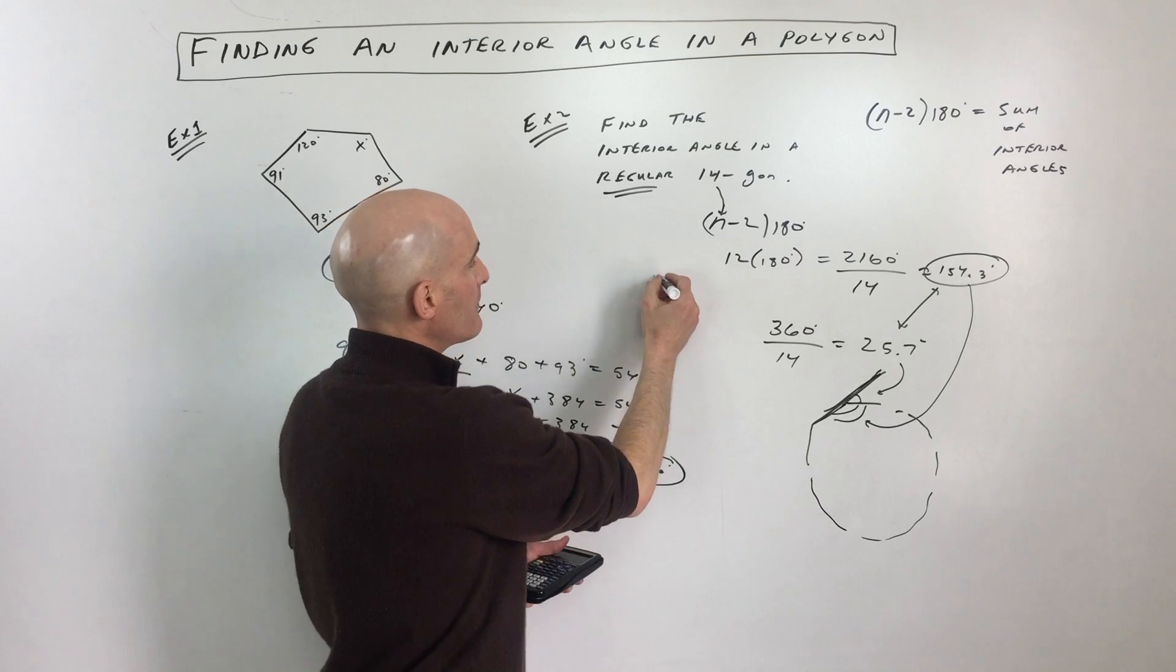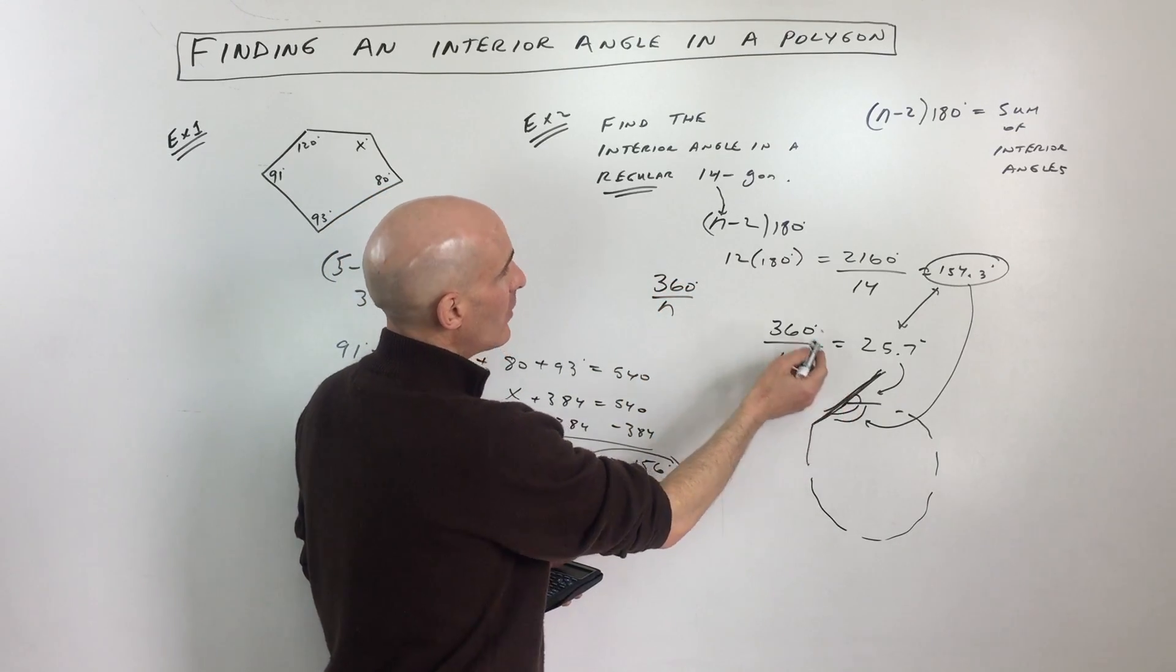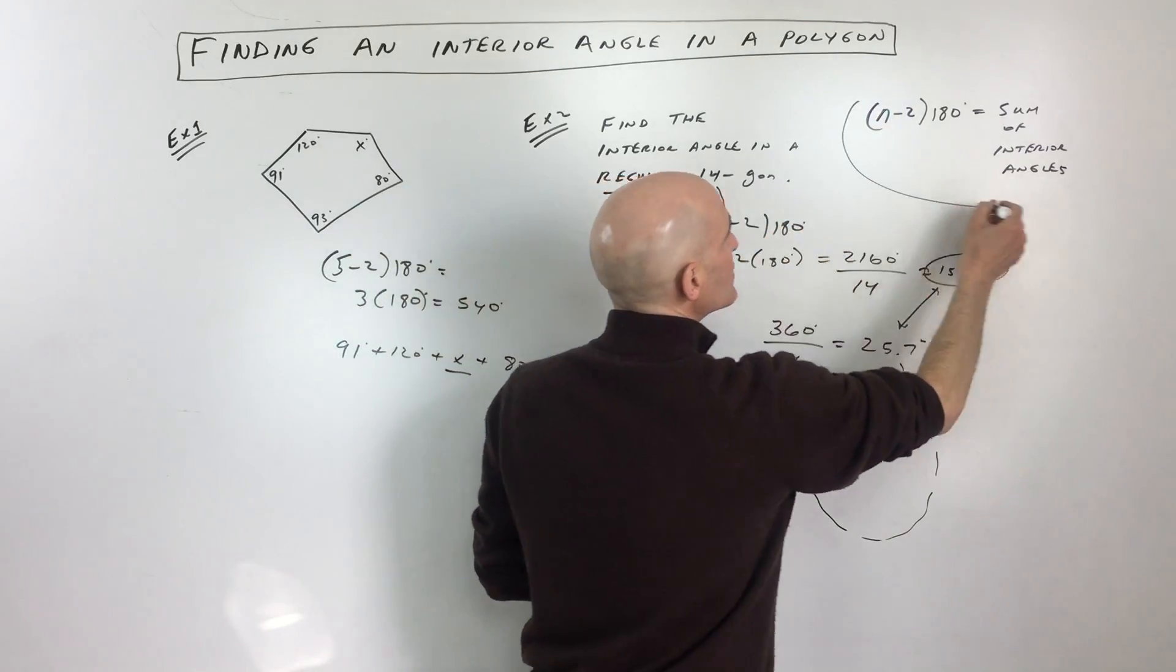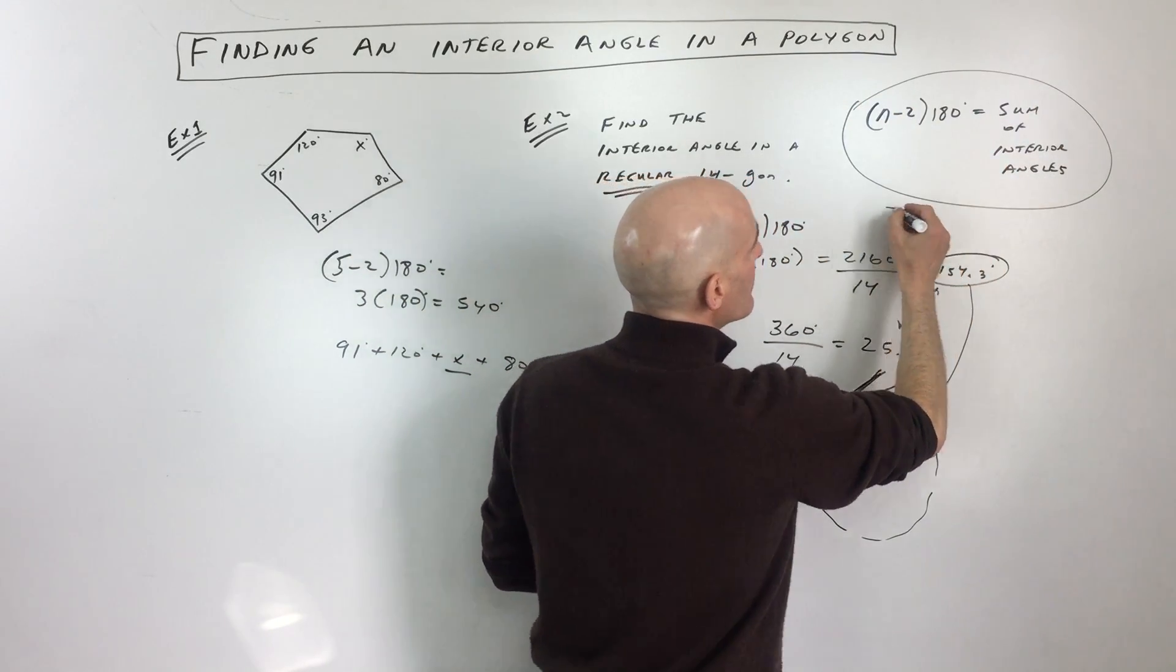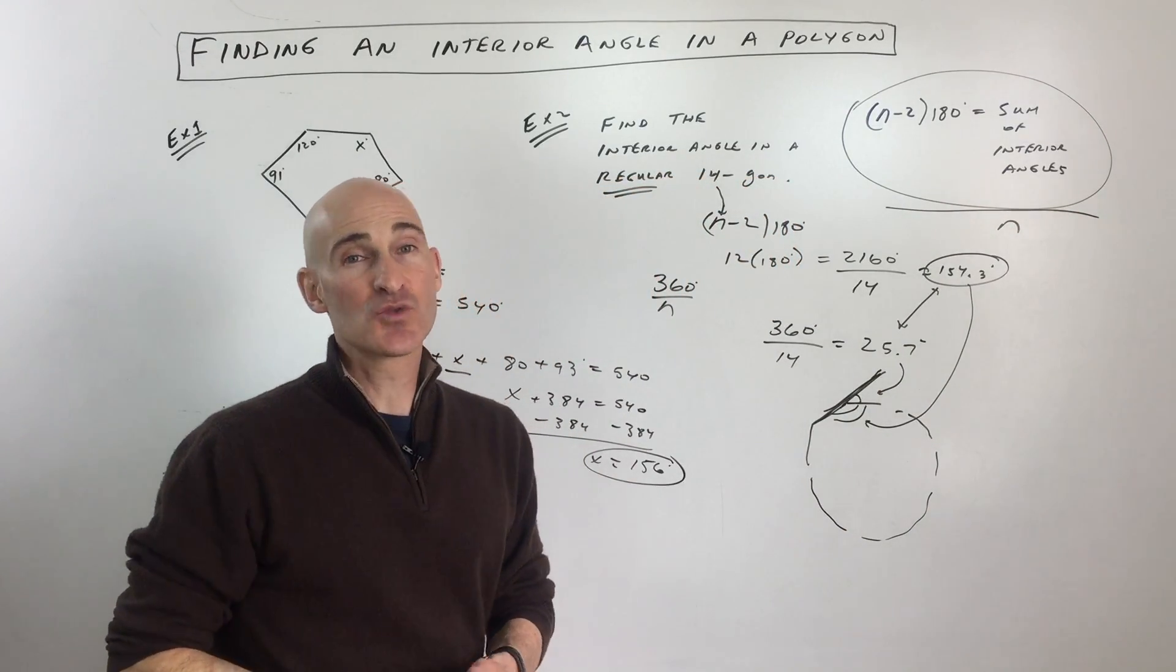So you can either use the formula 360 divided by n to get the exterior angle, or you can use this formula n minus 2 times 180 equals the sum of the interior angles, but then you're going to have to divide it by how many angles that you have to find the measure of just one of the angles.